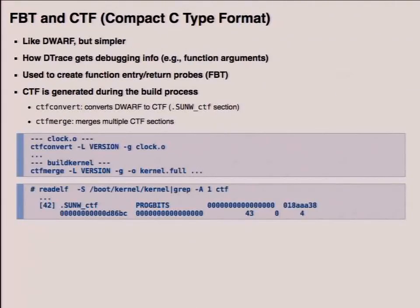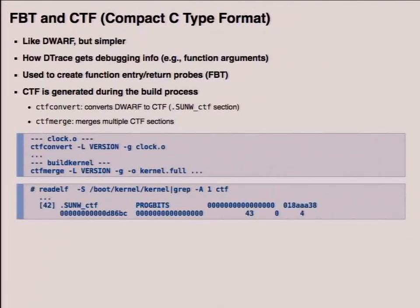Before going into FBT, I'll talk about CTF — the Compact C Type Format. It comes from Solaris; it's like DWARF but simpler, easier to parse, and more compact. This is how DTrace gets debugging information like function arguments, and it's used to create function entry and return probes for FBT. If you've built the FreeBSD kernel, you may have seen CTF convert and CTF merge running. CTF convert converts DWARF information to CTF and creates a SunWCTF section; CTF merge merges all the CTF sections into one. You can see the SunWCTF section by running readelf on the kernel.